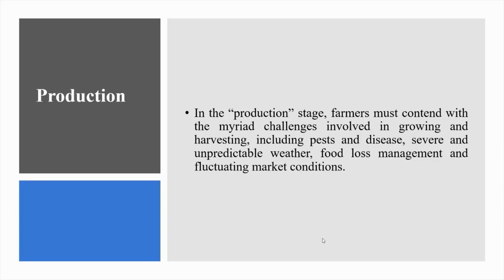Production stage: in the production stage, farmers must contend with the myriad challenges involved in growing and harvesting, including pests and disease, severe and unpredictable weather, food loss management and fluctuating market conditions. Under current projections, 60% more food will be needed by 2050, yet current production efforts are falling short of this target and global hunger levels are on the rise again after decades of progress. This is in addition to the 2 billion people already suffering from malnutrition globally today.